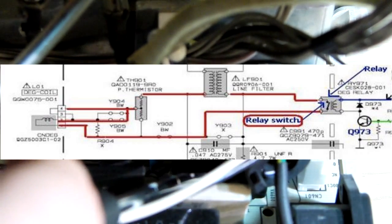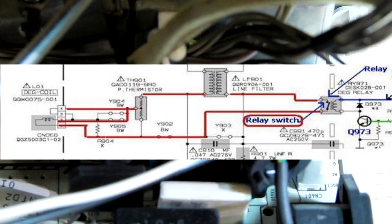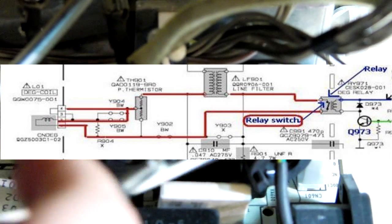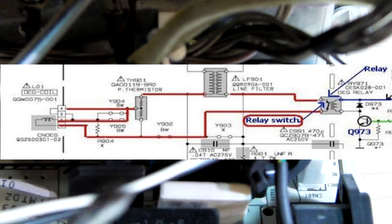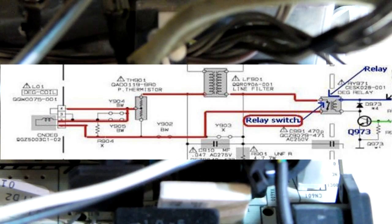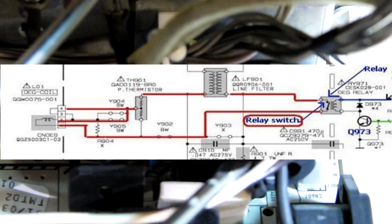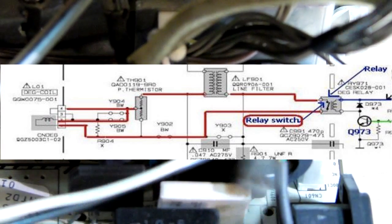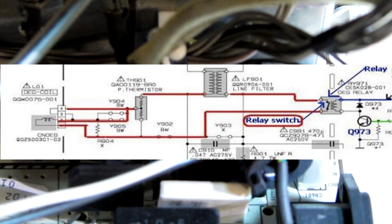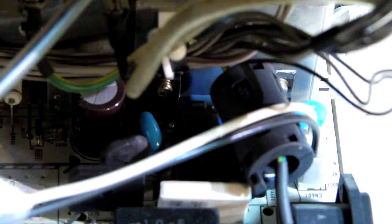In later models like this, the degaussing is controlled by a relay, as you can see here. This relay, when you turn on the power, will actually be active so current can pass through the coil, and then after a moment will switch off so no current will flow. That's very efficient, and you can turn on and off the degaussing from the menu.